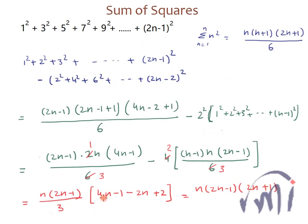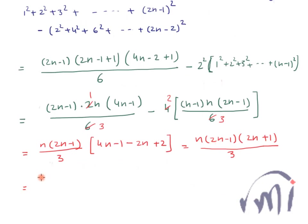So this equals n(2n−1)(2n+1) divided by 3, because 4n − 2n = 2n and −1 + 2 = +1. This can also be written as n(2n−1)(2n+1) = n(4n²−1), all divided by 3.